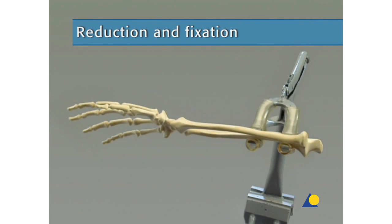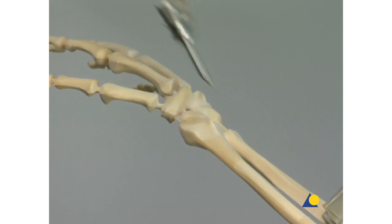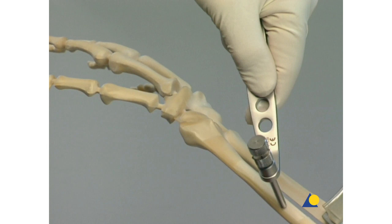The construction of the bridging frame will now be demonstrated. The bone model is secured in the clamp. After a stab incision is made, the drill sleeve assembly is inserted through the incision and placed directly on the bone surface. Care must be taken to avoid the superficial branch of the radial nerve.